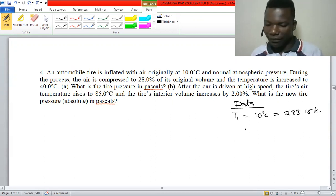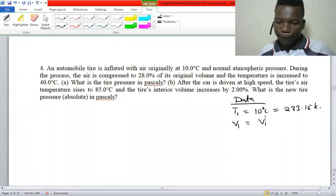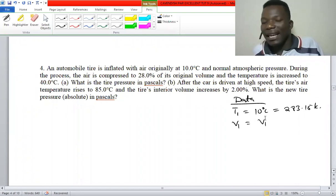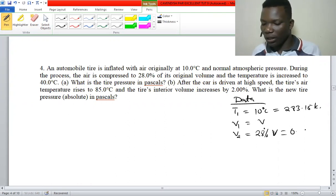The initial volume is just V. We've been told that the volume is compressed to 28 percent of its original, so if the original volume was V, the final volume V1 is 0.28 V.